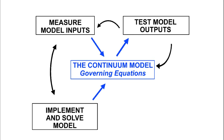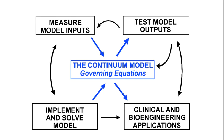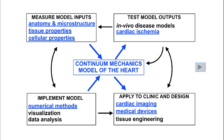Usually this then requires us to revise the model, make more measurements, implement the new model and test the outputs again. Once we've repeated this cycle and validated the model, we can start to apply it to clinical and bioengineering problems such as medical device design or analysis of clinical data. Let's examine an example of this interplay between theory and experiment by looking at the mechanics of the heart.